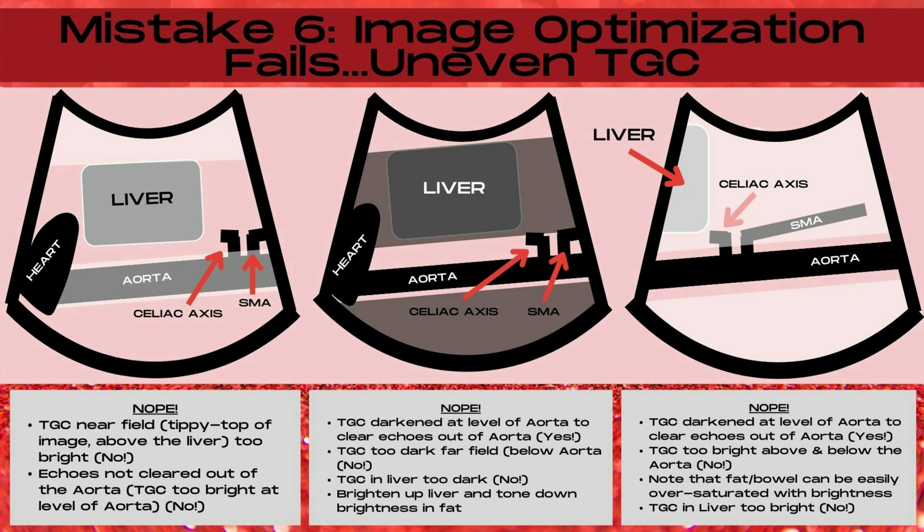In the first image to the left, the TGC in the near field at the tippity top of the image above the liver is too bright. When you stand back and look at your image, your eye will automatically be drawn to this bright area rather than your area of interest, which is the aorta. Any bright areas should be slightly toned down so that your eye is naturally drawn to the area of interest.